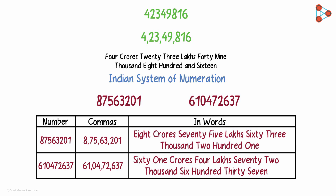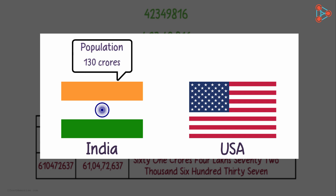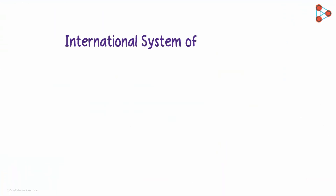Now I want you to imagine this situation. Say you travel to the United States of America and end up talking to a couple of people from there, and you tell them that the population of India is 130 crores. Well, they will have no idea what you are talking about, because they don't follow the Indian system of numeration.